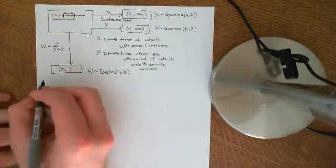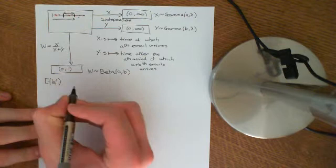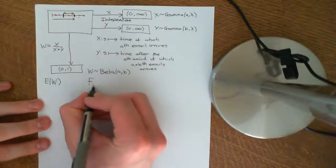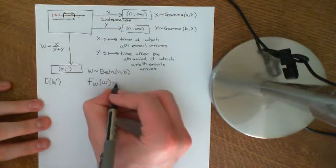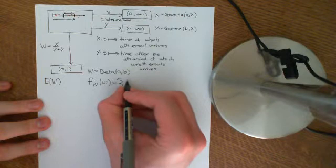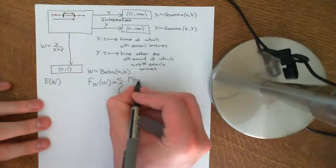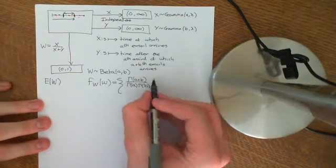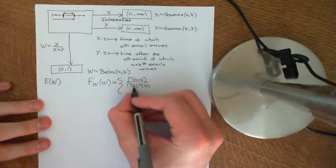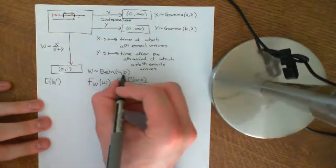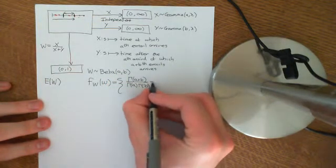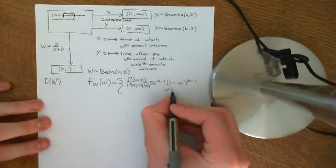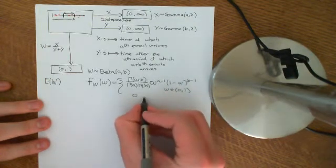Now we want to calculate the expected value of this beta distribution — the expected value of W. One way is straight from the formula. W is beta distributed, so its probability density function is: f(w) = [Gamma(A+B) / (Gamma(A) · Gamma(B))] · w^(A−1) · (1−w)^(B−1) for w in (0,1), and 0 otherwise. The normalising constant Gamma(A+B) / (Gamma(A)·Gamma(B)) was worked out in the video on convolutions of the gamma distribution.